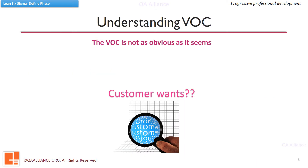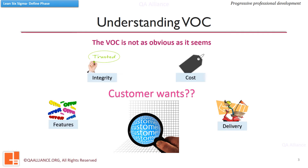In a Six Sigma project, what the customer perceives is of utmost importance. There are four dimensions which can help us find out what the customer perceives in a product or service, and keep our focus on these throughout the project: Features, Integrity, Cost, and Delivery.